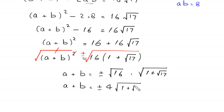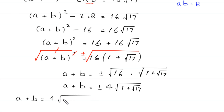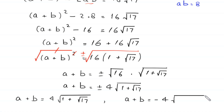Taking the square root of both sides, we get a plus b equals plus or minus 4 times root of 1 plus root 17. So the two solutions are: a plus b equals 4 times root of 1 plus root 17, and a plus b equals negative 4 times root of 1 plus root 17.